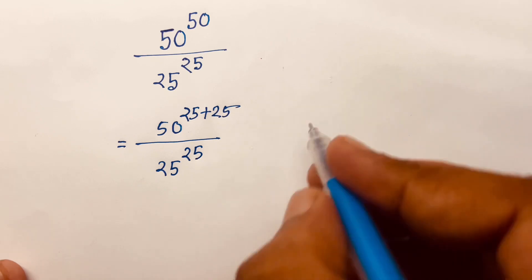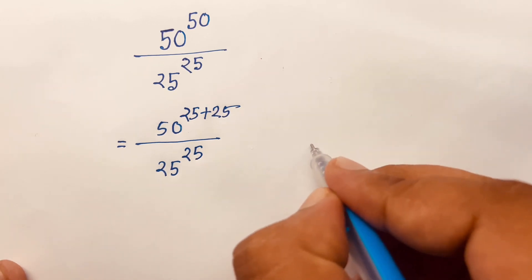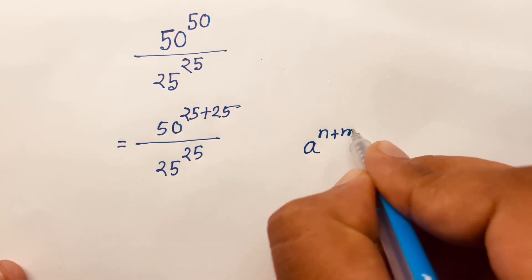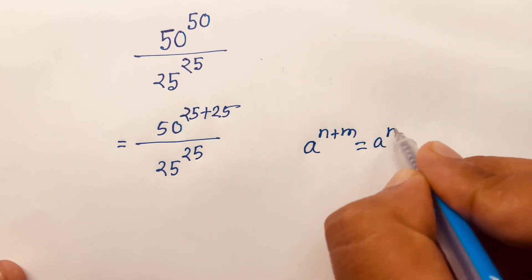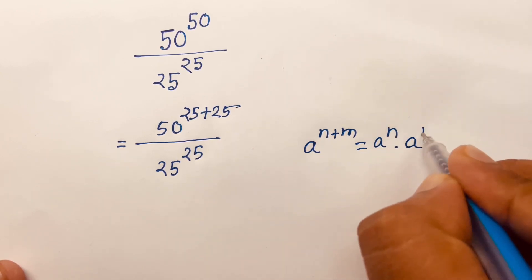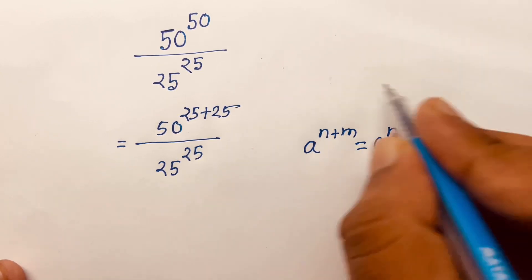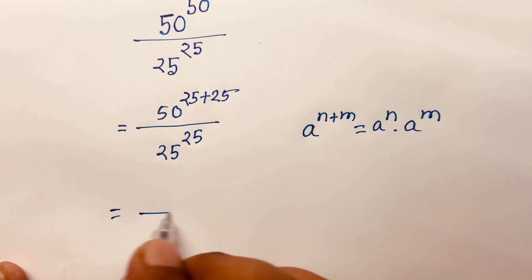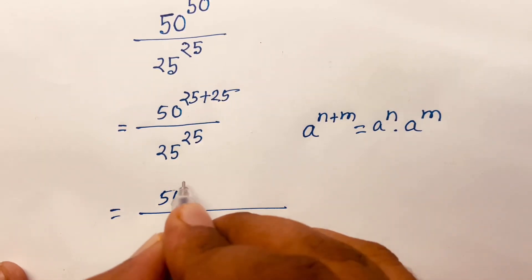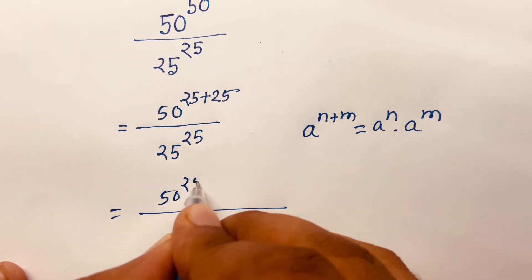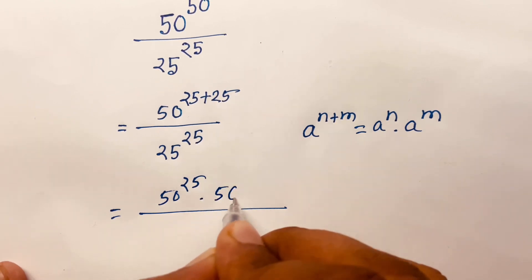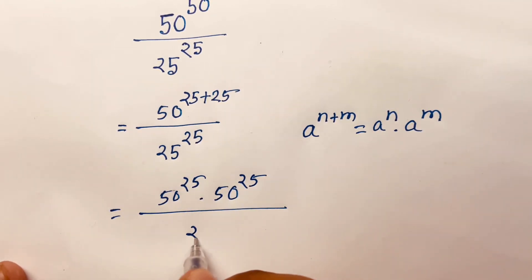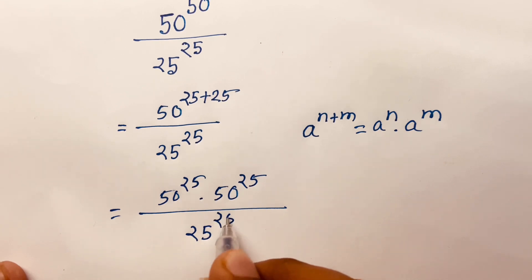We know the exponent law: a to the power (n plus m) is equal to a to the power n times a to the power m. According to this rule, I can write 50 to the power 25 times 50 to the power 25, over 25 to the power 25.